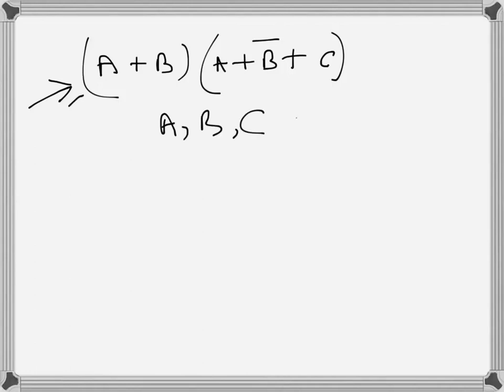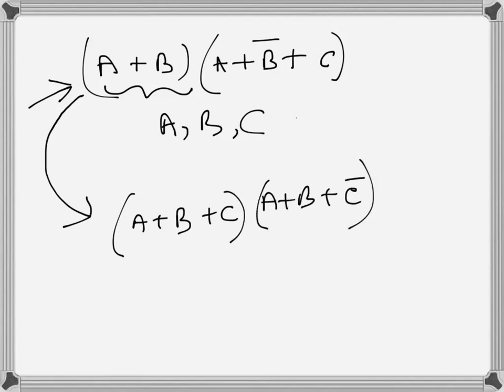Standard POS expression will be A plus B, and then C is absent here we can see, so we add C. And then A plus B plus C bar. And this one already has everything, so that will be the standard POS expression for this one.